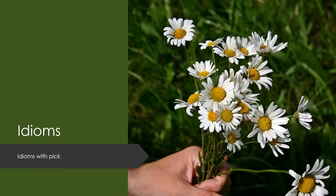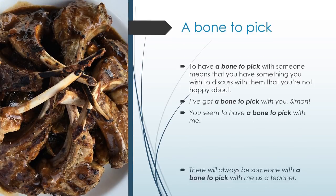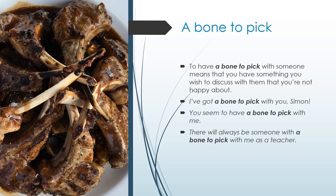IDIOMS with PICK. A bone to pick: To have a bone to pick with someone means that you have something you wish to discuss with them that you're not happy about. "I've got a bone to pick with you, Simon." "There will always be someone with a bone to pick with me as a teacher."